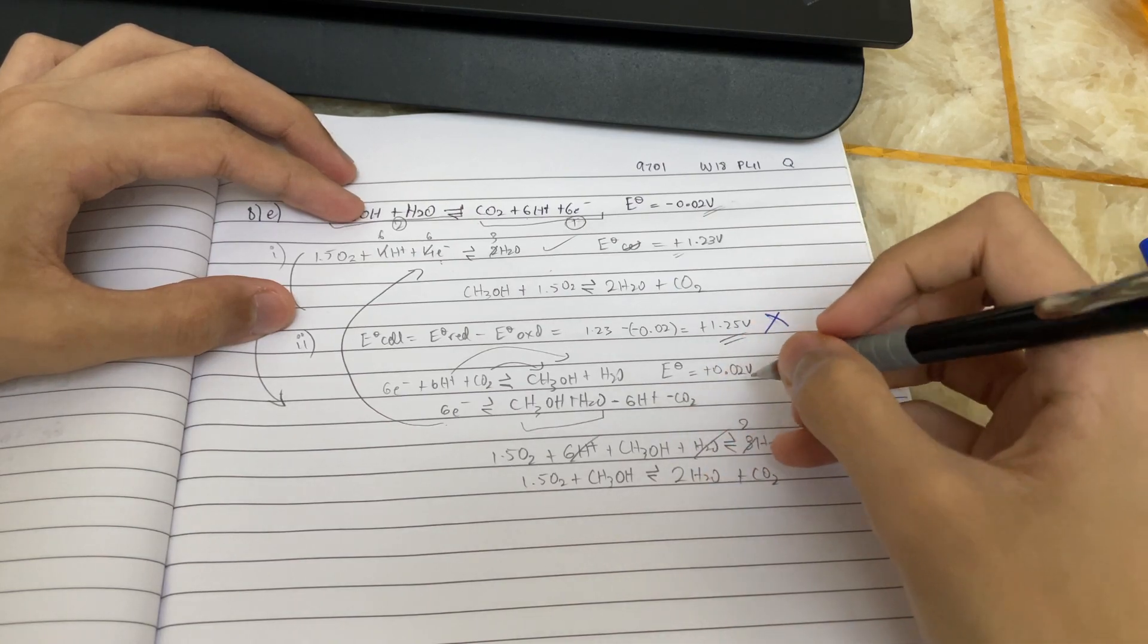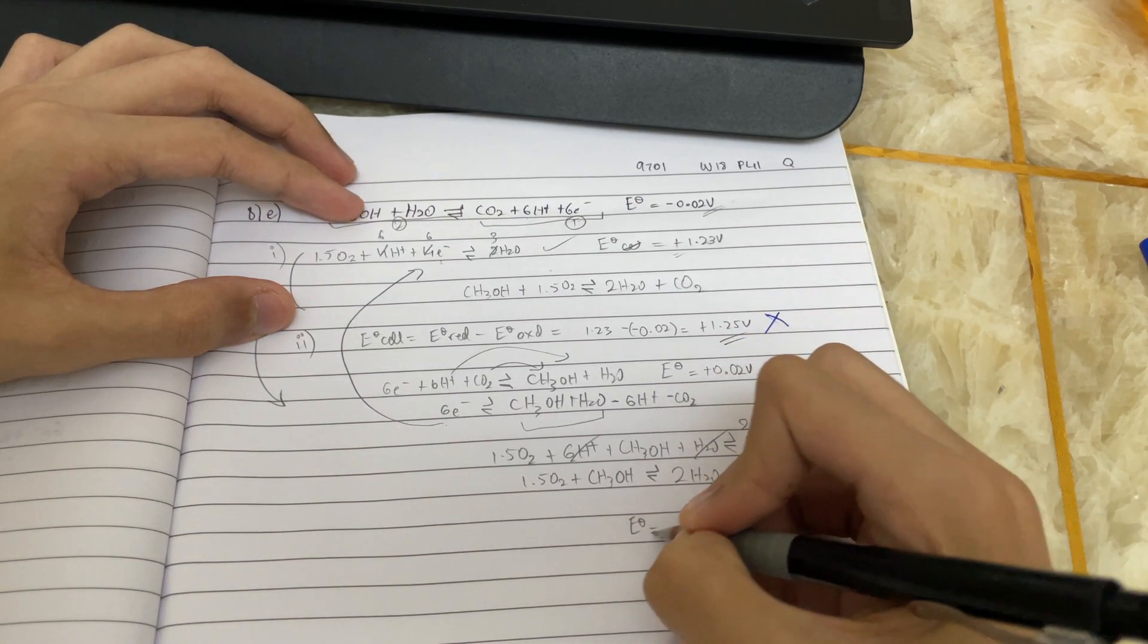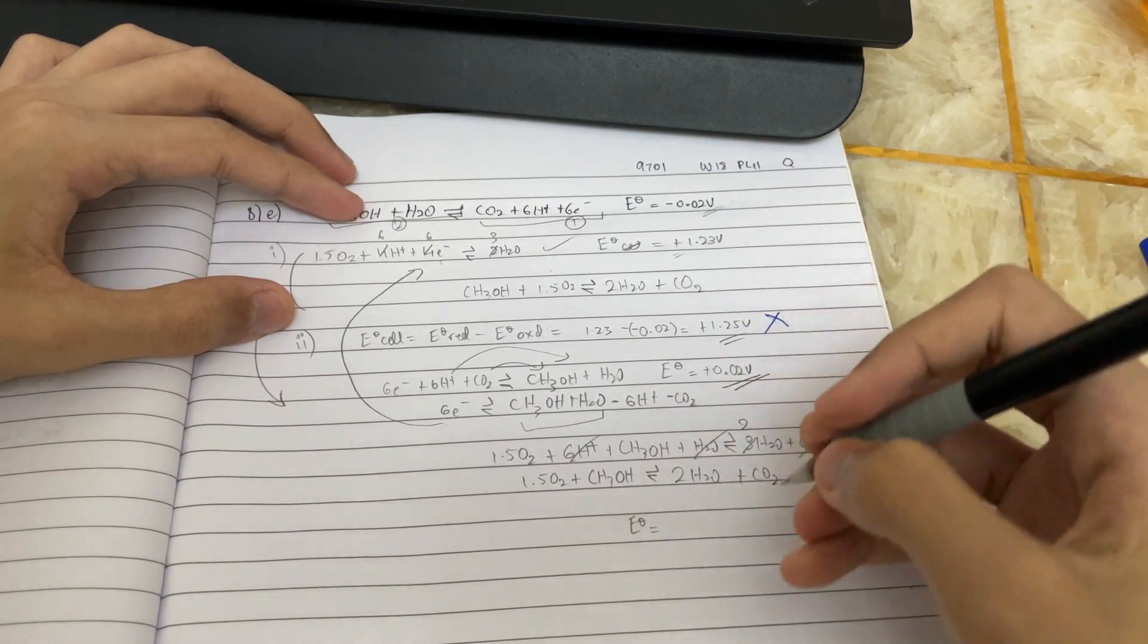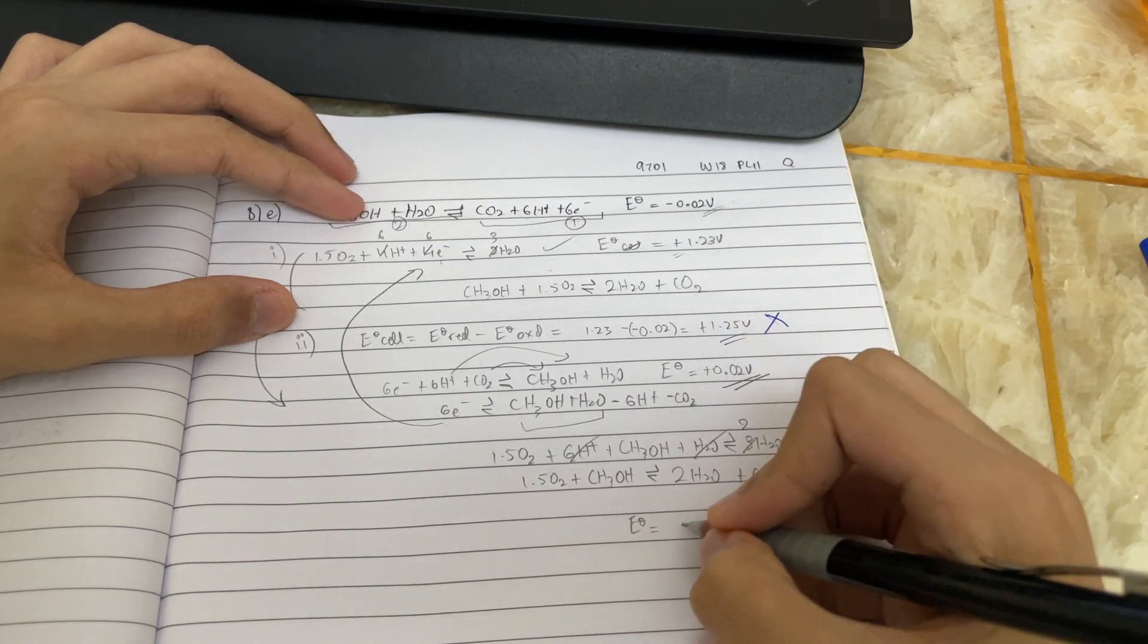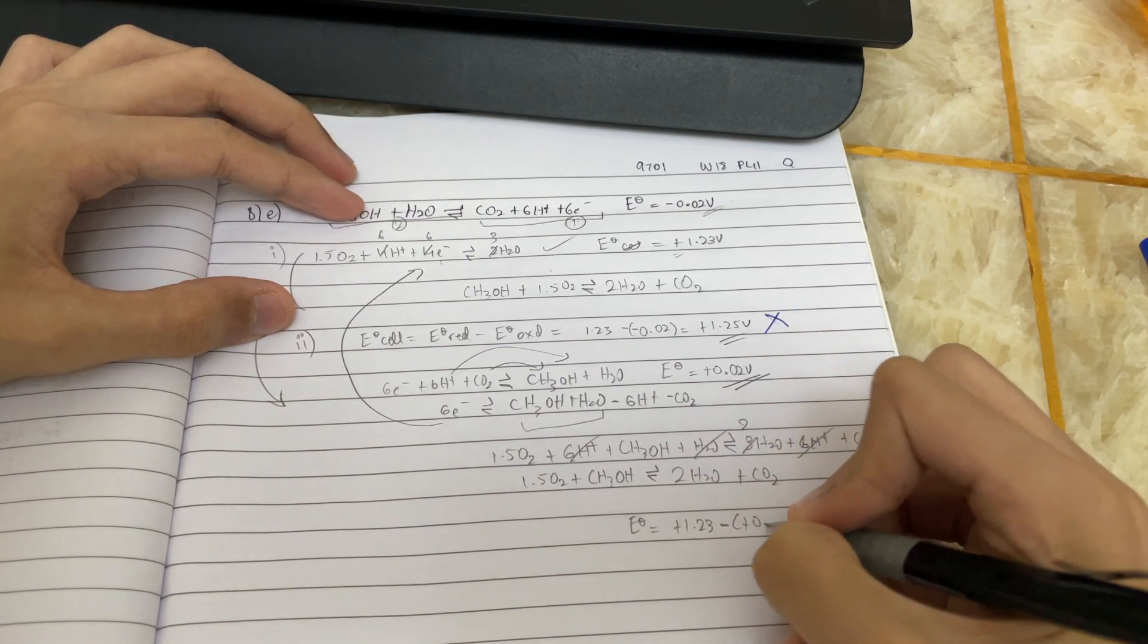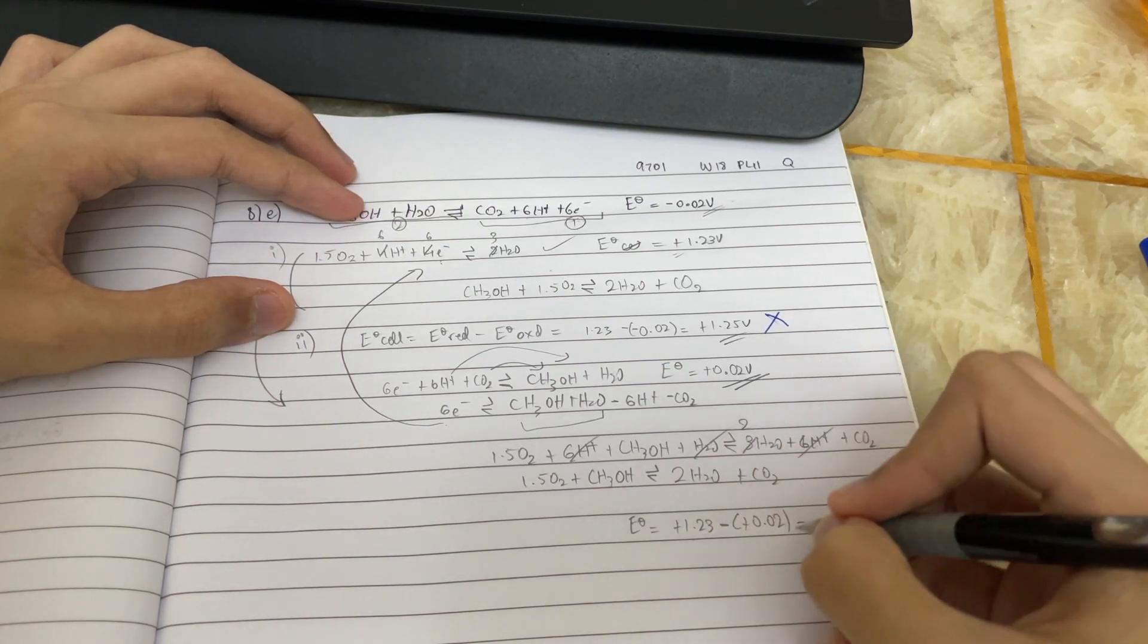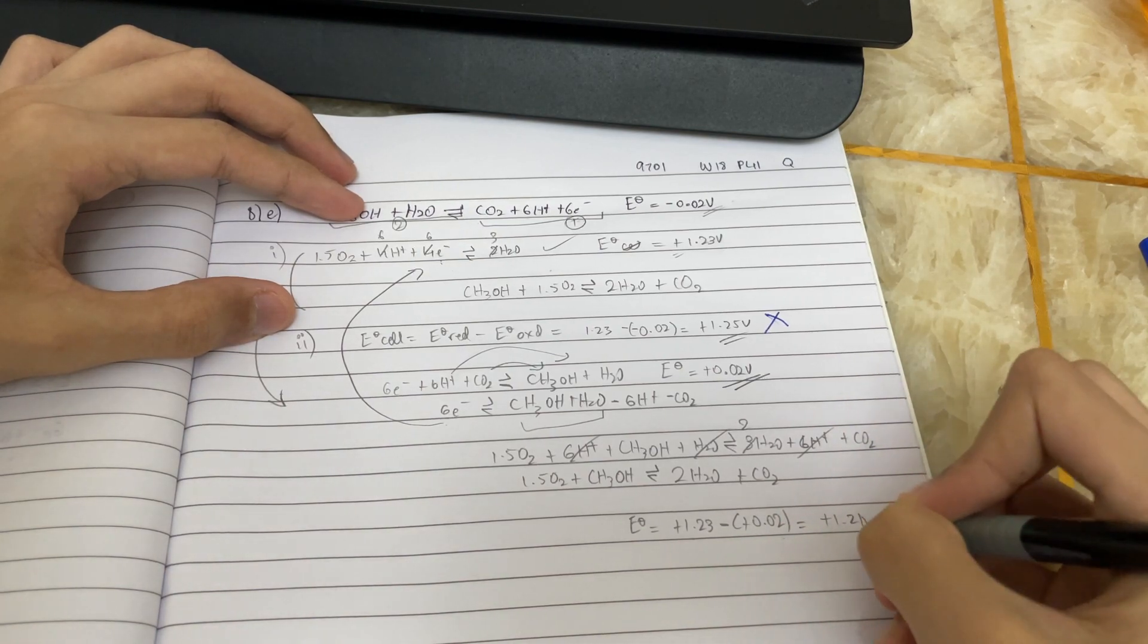Now, what happens to the E-cell value? Because you flip the equation around, this becomes plus 0.02, as aforementioned. But this is still the higher, this is still more positive, so it becomes plus 1.23 minus, and because this is positive, plus 0.02. And so the final answer would just be this subtracted by this, which would give you plus 1.21 voltage.